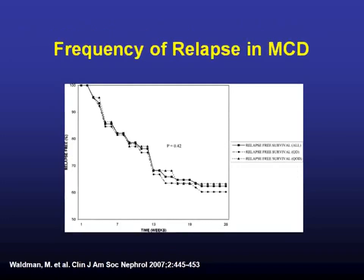This graph shows the frequency of relapse — about 60 percent of patients are relapse-free at 25 weeks, so there's a pretty high incidence of relapse. This goes for a lot of nephrotic syndromes: membranous, minimal change disease, and FSGS. So if you have a patient in clinic with a history of treated nephrotic syndrome who has a lot of proteinuria on UA, that would be a definite reason to send them back to nephrology because relapses are very common.